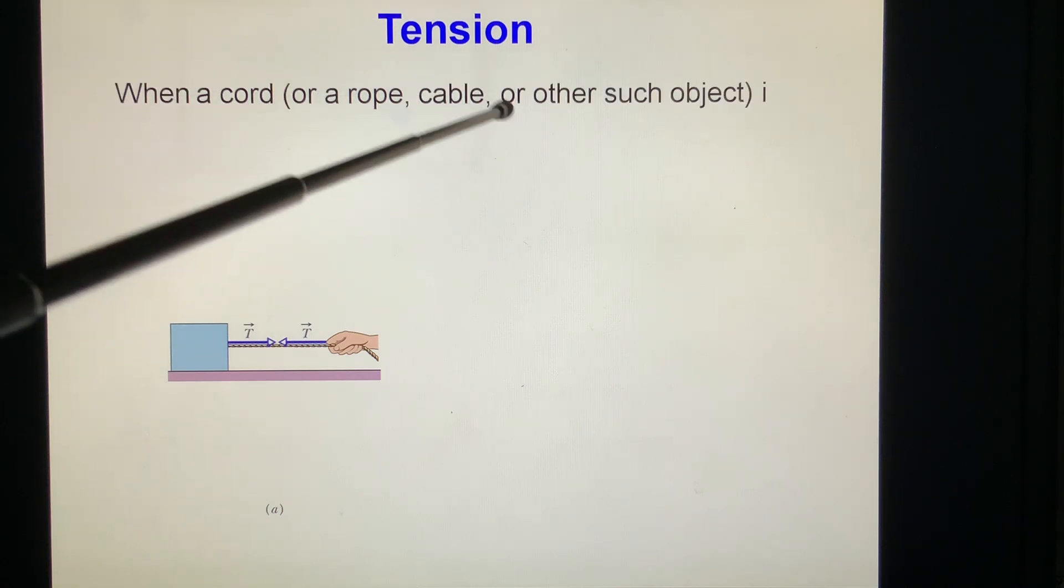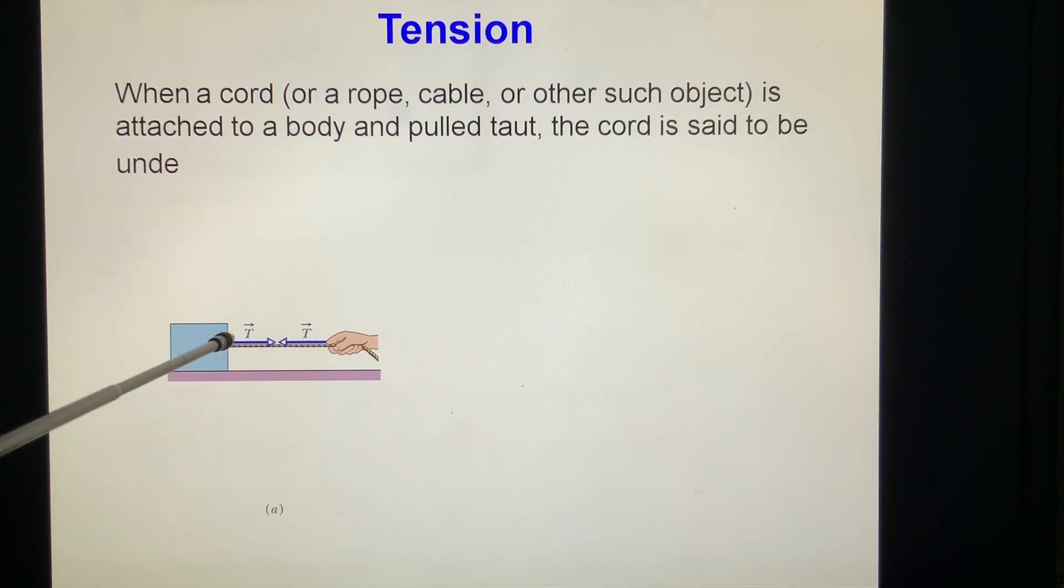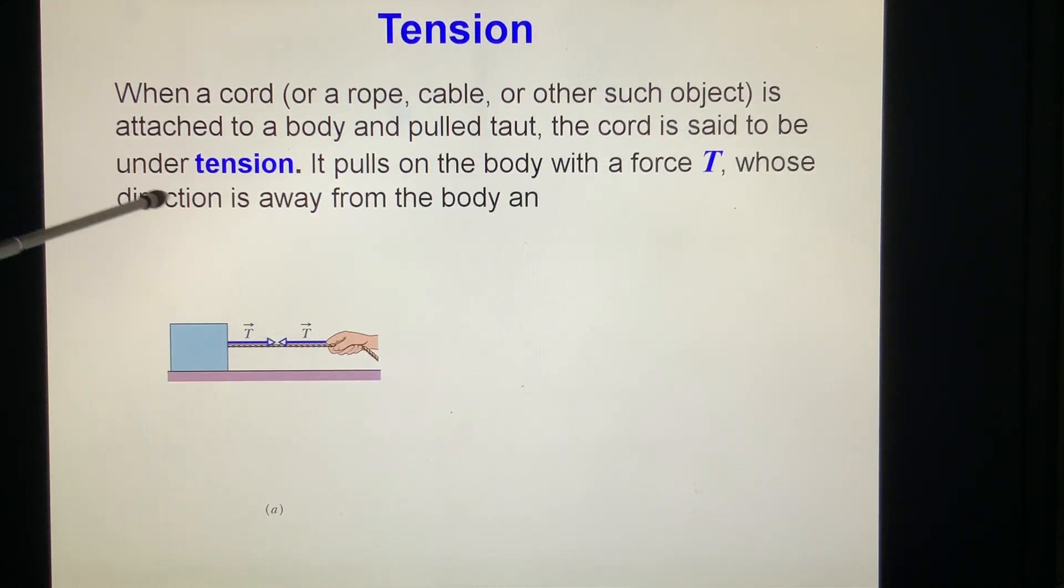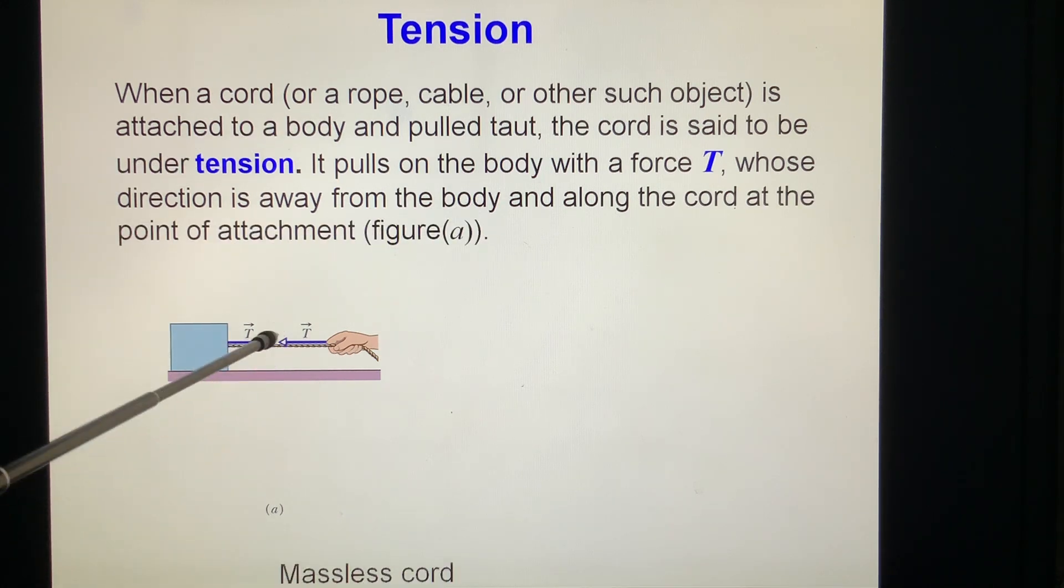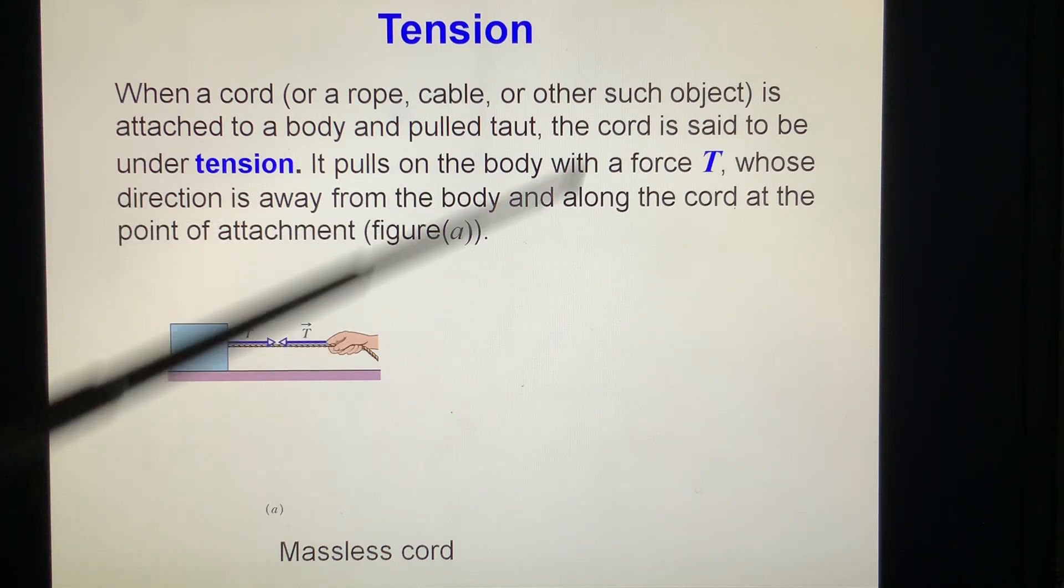Tension. When a cord, or a rope, cable, or other such object, is attached to a body, this one, a body, and pulled taut, the cord is said to be under tension. This one is under tension. It pulls on the body with a force T. The force direction is always from the body. This T is only leaving the body. The force direction is always from the body and along the cord at the point of attachment.